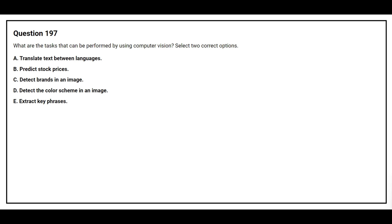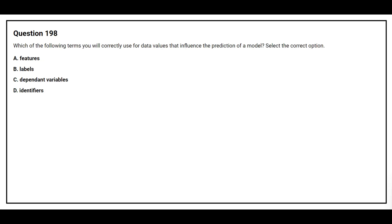Question number 197. What are the tasks that can be performed by using Computer Vision? Select two correct options. Option A: Translate text between languages. Option B: Predict stock prices. Option C: Detect brands in an image. Option D: Detect the color scheme in an image. Option E: Extract key phrases. The correct answers are Option C: Detect brands in an image, and Option D: Detect the color scheme in an image.